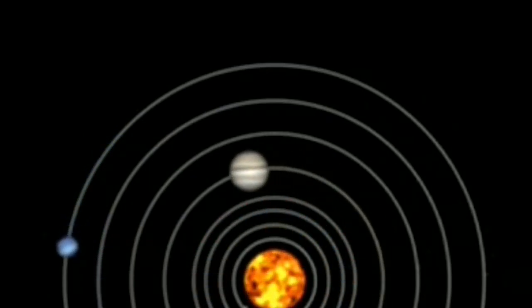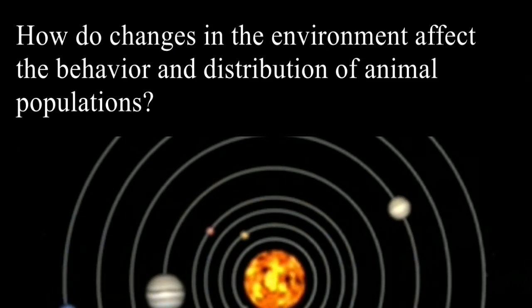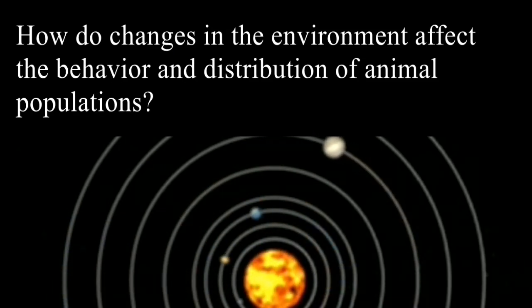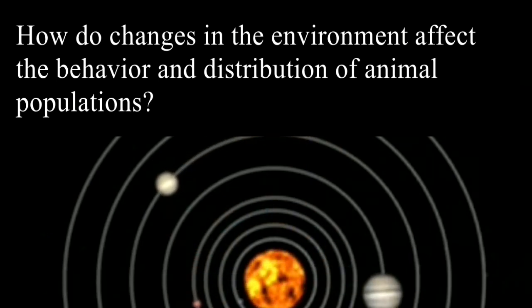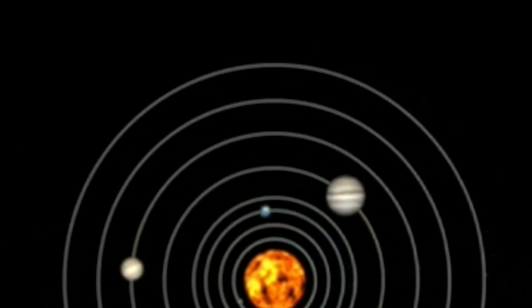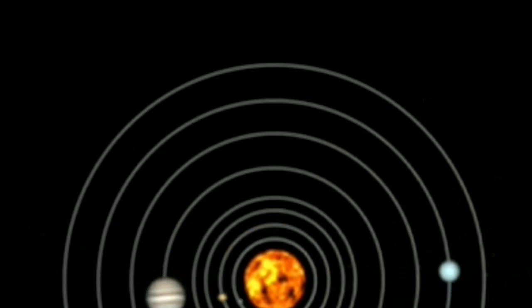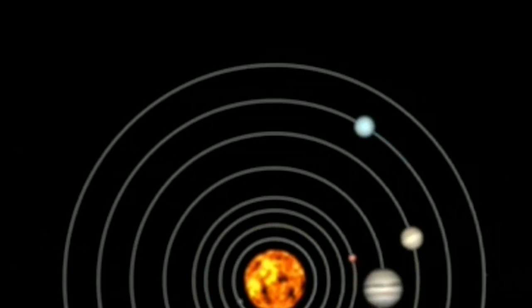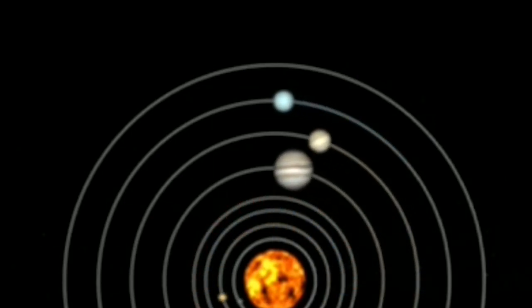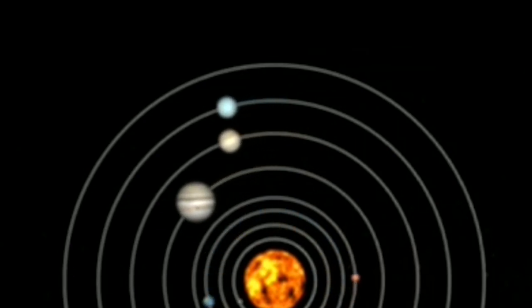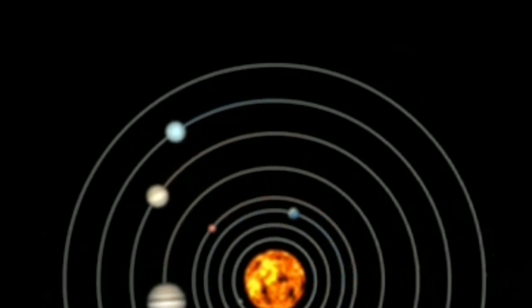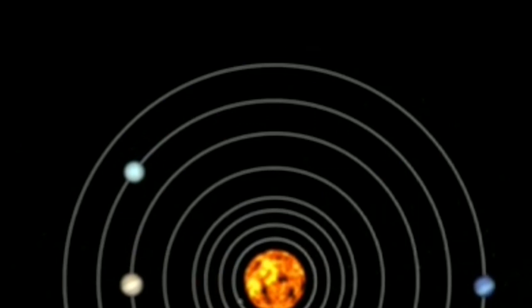Take the next question: How do changes in the environment affect the behavior and distribution of animal populations? Listen to the answer. You have to answer in that way: Changes in the environment, such as the availability of food, water, or habitat, can influence the behavior and distribution of animal populations. Animals may migrate, change their feeding habits, or alter their social behavior in response to environmental changes.